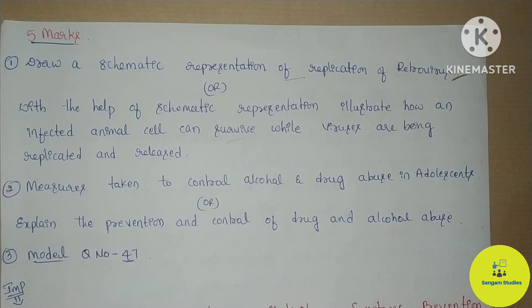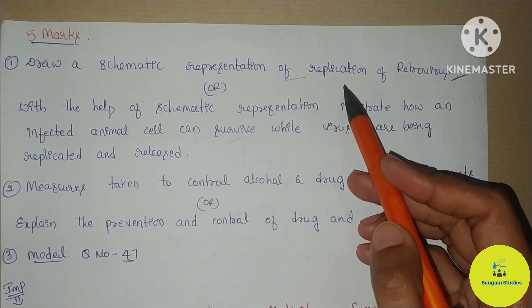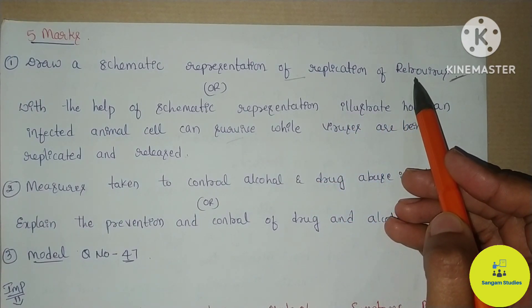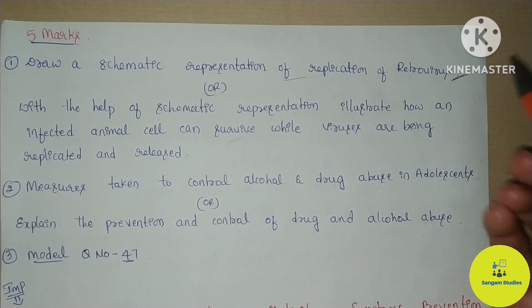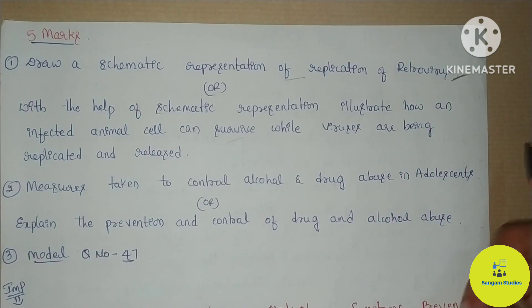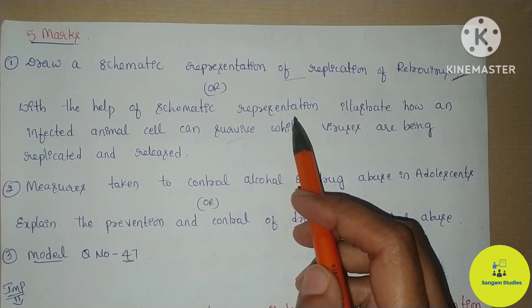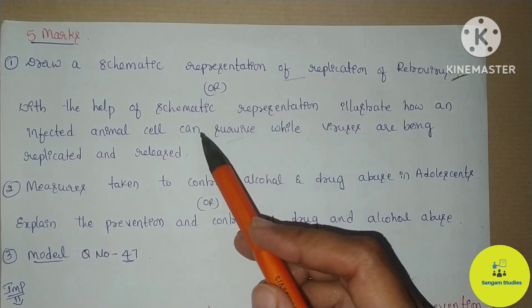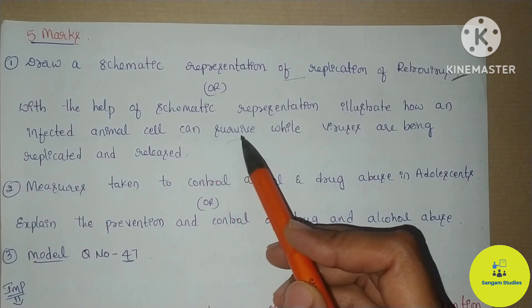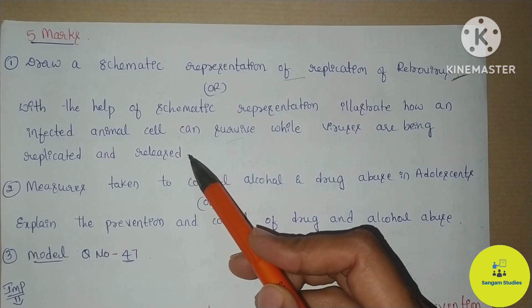Next, 5-mark important question number 17: draw a schematic representation of replication of retrovirus — very important. Also: with the help of a schematic representation, illustrate how an infected animal cell can survive while viruses are being replicated and released.